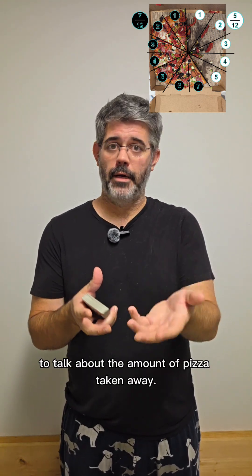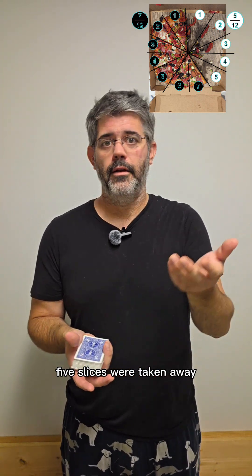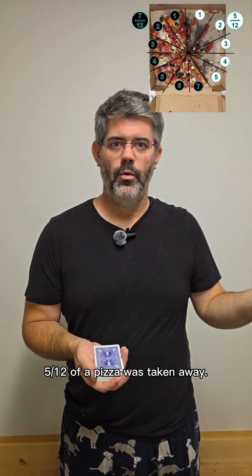We could also use a fraction to talk about the amount of pizza taken away. If the pizza started with 12 slices, five slices were taken away, five twelfths of a pizza was taken away.